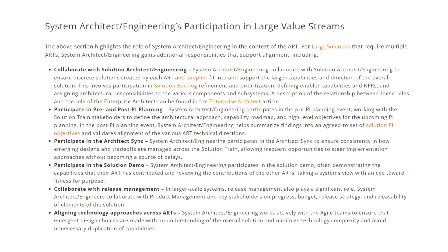The final one is aligning technology approaches across ARTs. You should provide a common technology approach when it comes to multiple ARTs. System architect and engineering work actively with the agile teams to ensure that emergent design choices are made with an understanding of the overall solution, minimizing technology complexity and avoiding unnecessary duplication of capabilities. These are the additional five or six responsibilities when it comes to large value streams.